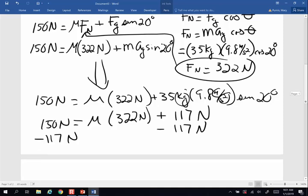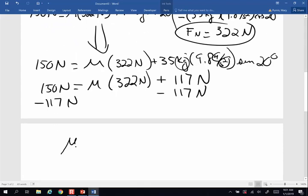I want to get all those newtons on one side of the equation. I'm going to subtract 117 from both sides. And I am going to end up with mu is going to be equivalent to 33 newtons, once I do this subtraction, divided by 322 newtons,